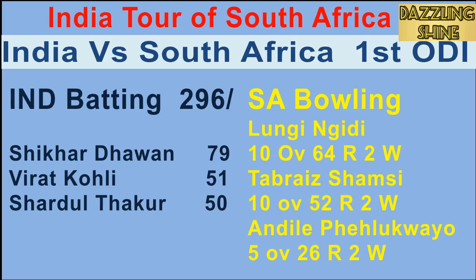Third ball of the ninth over, Mokaram to Rahul — outside off, a short-of-length ball. Rahul looks to defend and it takes the edge straight to the wicket keeper. First wicket falls — Rahul is gone for 12.